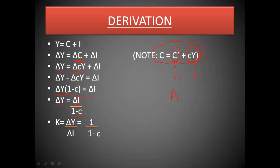The multiplier tries to establish a relationship between income and investment. We are saying that if there is a unit change — a unitary change — in investment, what is the quantum of change in the level of income? That is the multiplier effect. Whenever we increase investment, or whenever we save less, the multiplier will be much higher and its effect will be manifold.